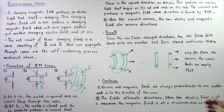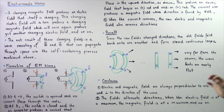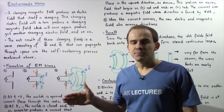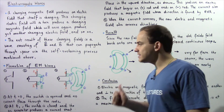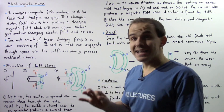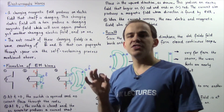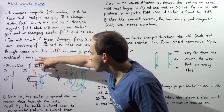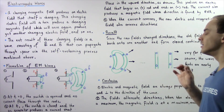The electric current traveling through the conducting rods also produces a magnetic field whose direction is found by applying the right-hand rule. We wrap our right hand around the wire so that the extended thumb points in the direction of the current. The resulting magnetic field forms concentric circles pointing into the board, shown by circles with an X, while the green lines represent the electric field.